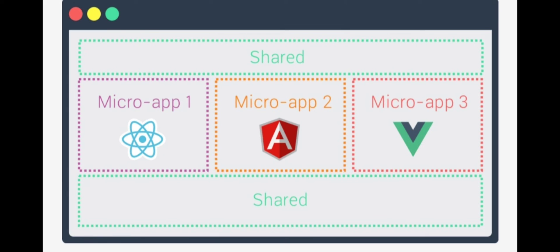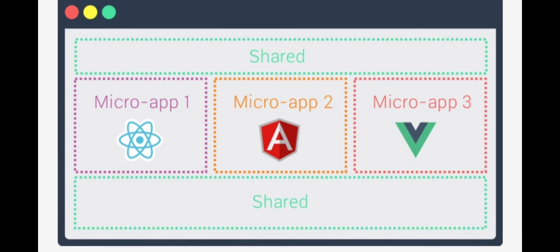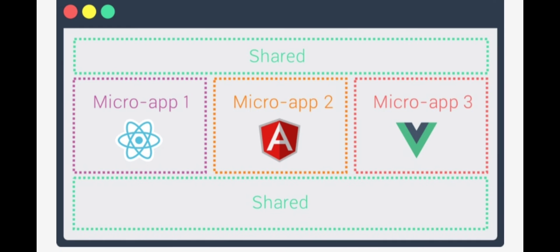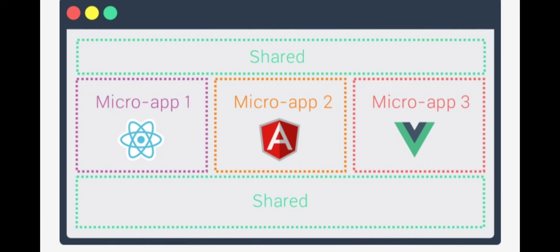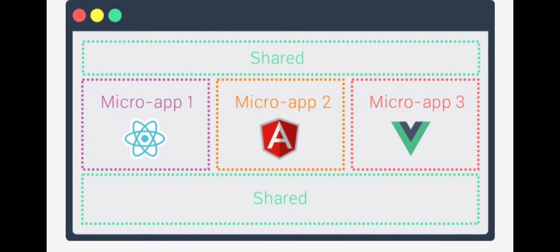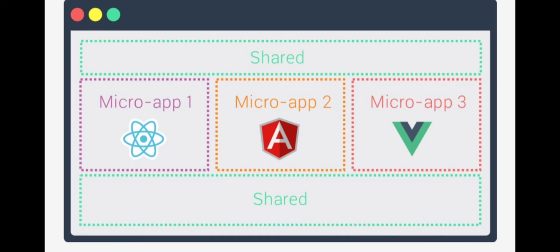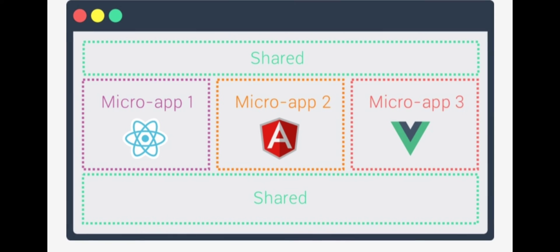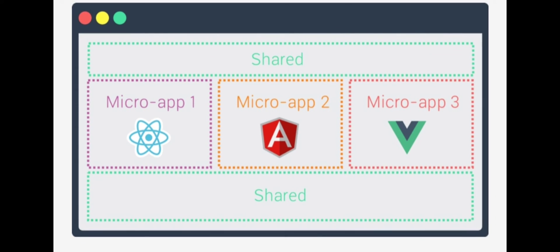We can save different repositories — code repositories. We can bundle all modules together. Many companies like Spotify, Kirana, Upwork, Allegro, and HelloFresh use micro front-ends. Spotify is a music app, and we can run micro front-ends on it.